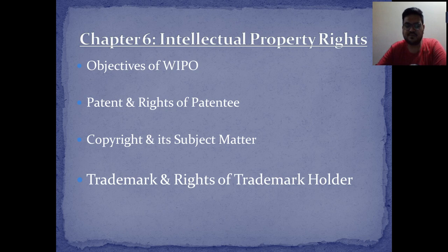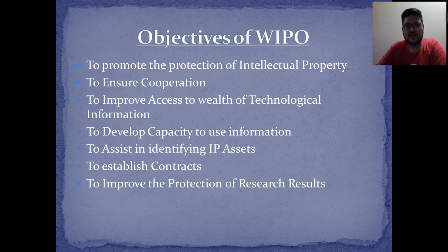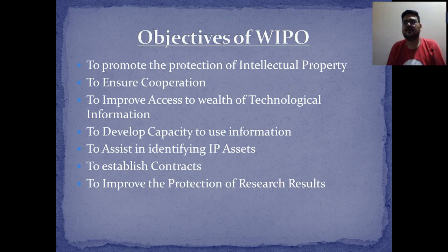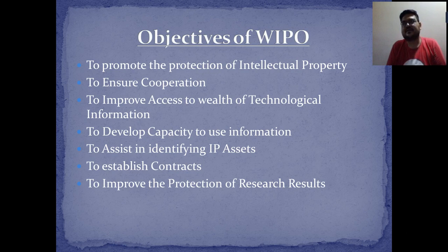Now we go to the next chapter — Intellectual Property Rights (IPR). This is also a short chapter. We'll quickly see the objectives of WIPO, what patents and rights of a patentee mean, what copyright and its subject matter are, and what trademark and rights of a trademark holder are. WIPO is the World Intellectual Property Organization. The main objective of this organization was to promote the protection of intellectual property — any content freshly created comes under intellectual property.